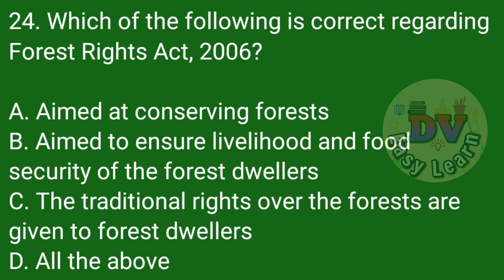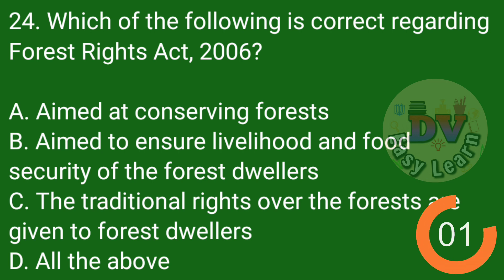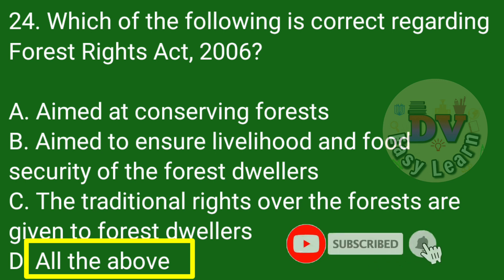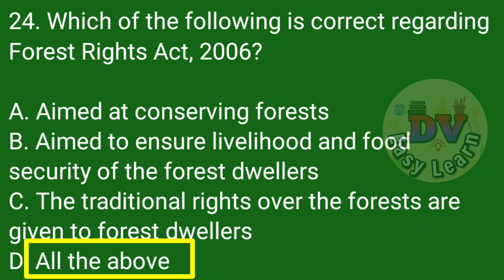Question number 24: Which of the following is correct regarding the Forest Rights Act 2006? Correct answer: All of the above — aimed at conserving forests, aimed to ensure livelihood and food security of the forest dwellers, and the traditional rights over the forests are given to the forest dwellers.